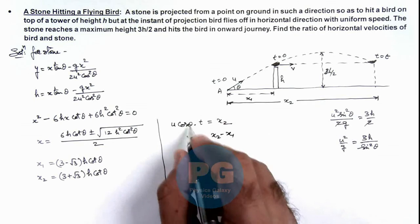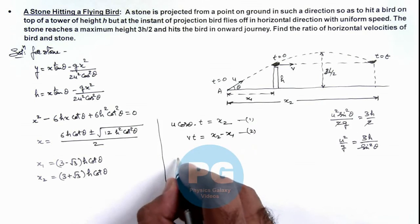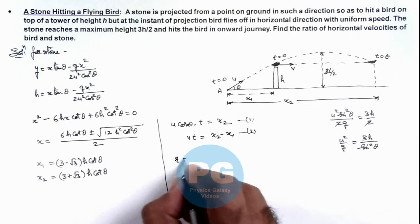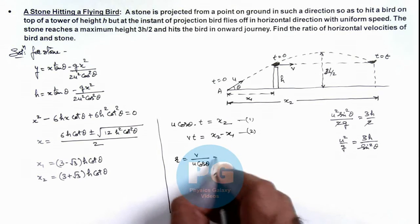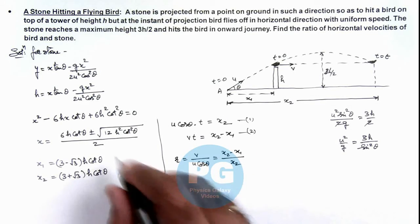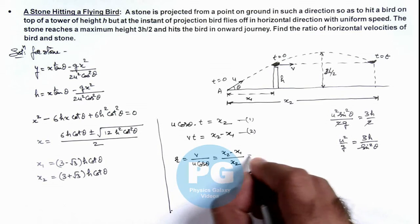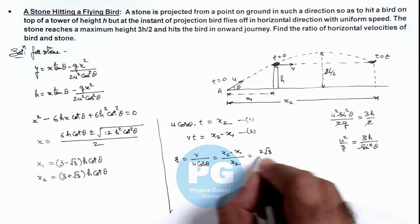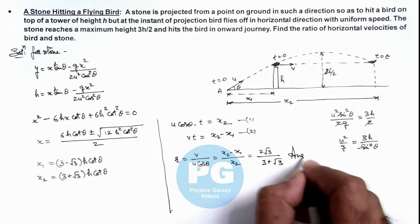In this situation, if we calculate the ratio from equations 1 and 2, we can see the ratio which we are required to find is v/(u·cos(theta)), and the value will be (x₂ - x₁)/x₂. If you substitute the values, this will give you 2√3/(3 + √3). That will be the final result of this problem.